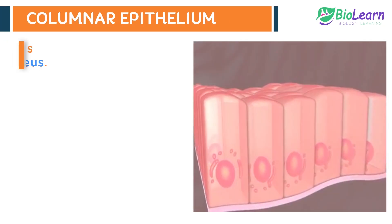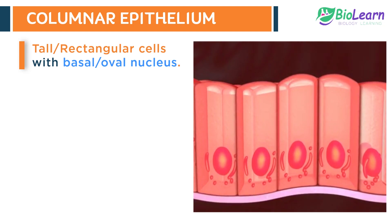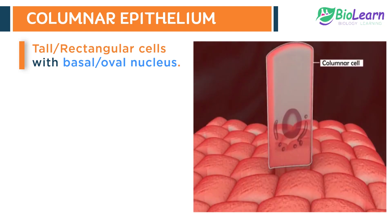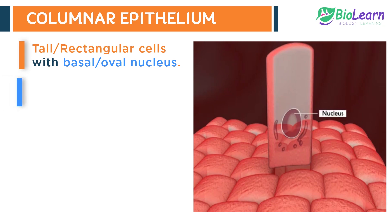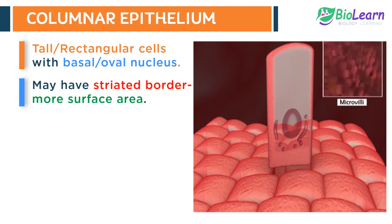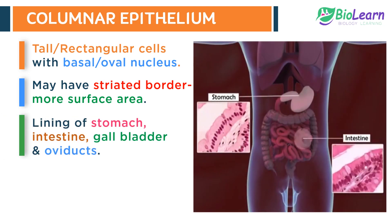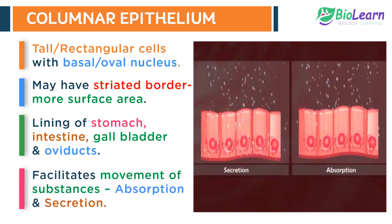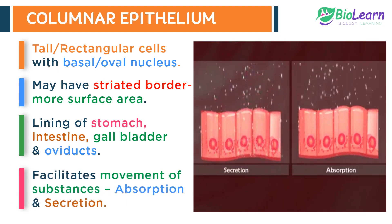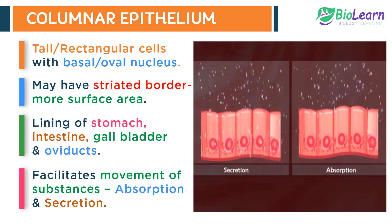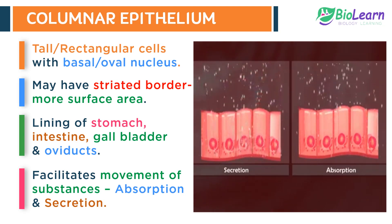Columnar epithelium consists of tall, elongated, rectangular cells with a basal-oval nucleus. The cells may have a striated border, which increases their surface area. It forms the lining of the stomach, intestine, gallbladder, and oviducts. It facilitates the movement of substances and thus helps in absorption as well as secretion.